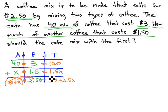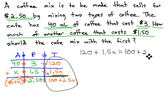As we only have one variable, we only need one equation that comes from the very last column. Adding the amount of investments together, 120 in the first coffee, plus 1.5x in the second coffee, equals 100 plus 2.5x of total investment.